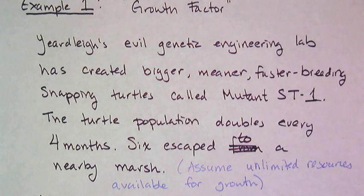Now let's look at an example using the growth factor. Yardley's evil genetic engineering lab has created bigger, meaner, faster breeding snapping turtles called the mutant ST-1. If you've ever seen a snapping turtle, you know they do not need to be bigger, meaner, or faster breeding. The turtle population doubles every four months, which is crazy, and six escaped to a nearby marsh.